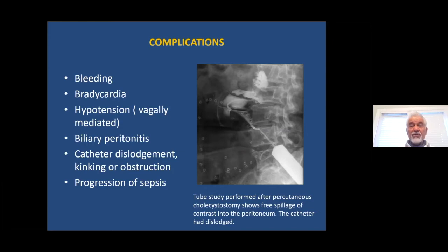Sometimes small stones in the gallbladder may lodge into and obstruct the catheter. Therefore, maintenance of the catheter includes flushing it twice a day with 5 cc of saline, making sure that when you inject saline you are able to aspirate at least the same amount back, indicating the catheter is open. Keeping the catheter open is an important nursing measure and nurses should be taught to do this.